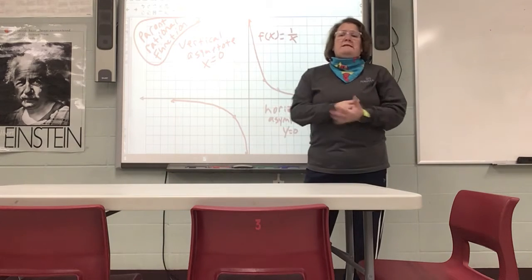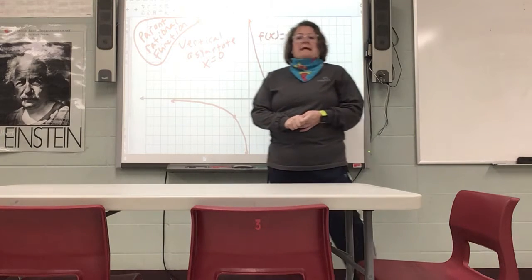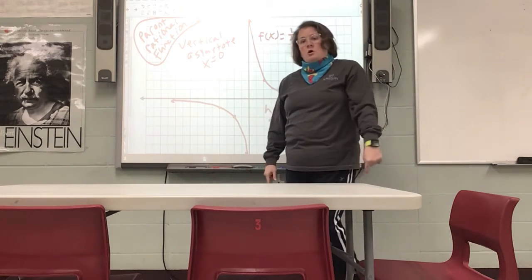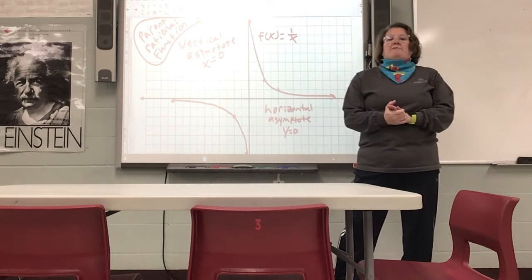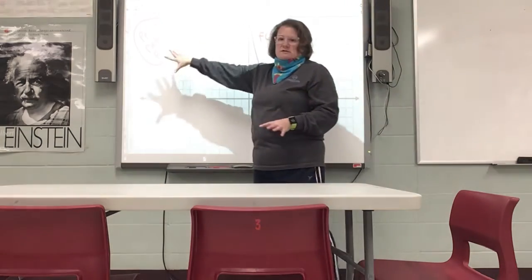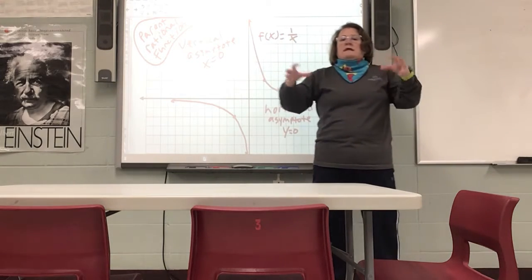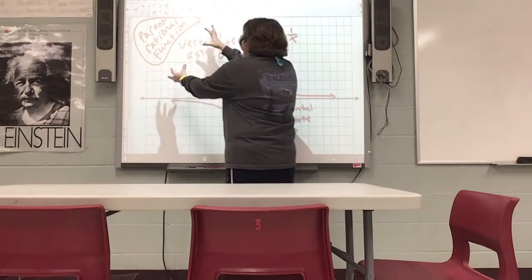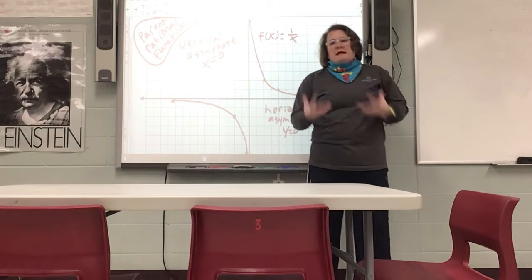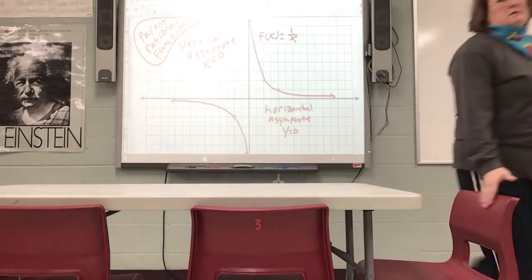These are not going to be difficult to graph because you can use your graphing calculator — it can graph these the same as always. But what the calculator doesn't tell you are your asymptotes, so we're going to learn how to figure those out. There are different ways rational functions can look — as more things happen to the parent function, those branches and asymptotes will be moving around. That's what we'll be spending our time learning today.